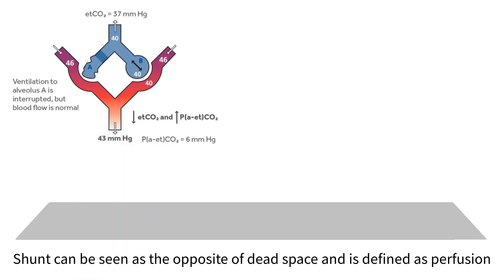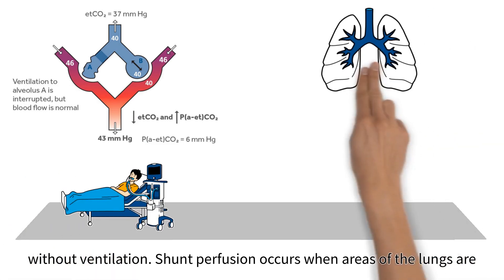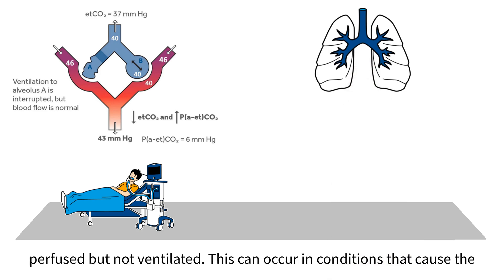Shunt can be seen as the opposite of dead space and is defined as perfusion without ventilation. Shunt perfusion occurs when areas of the lungs are perfused but not ventilated.